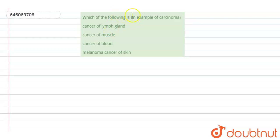Hello students, have a look at the question. Which of the following is an example of carcinoma? Options are: cancer of lymph gland, cancer of muscles, cancer of blood, melanoma cancer of skin. So firstly, we will understand what is carcinoma.